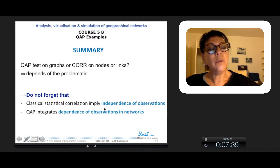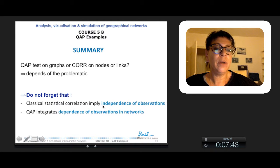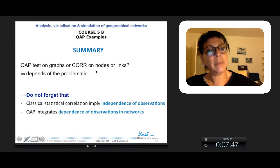To summarize, the choice of QAP correlation or Pearson correlation depends on the problematics. But do not forget that it is important in your problematic to take into account that classical statistic correlation implies independence of observation. If you want to take into account the dependence of observation, you better take the QAP correlation that integrates these dependencies.